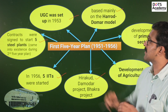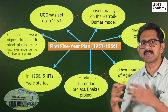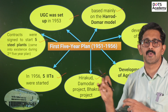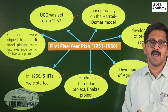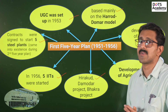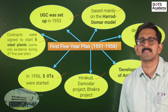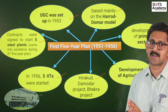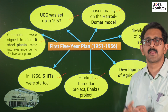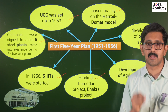The UGC was formed in 1953 during the first five-year plan. If someone says UGC was formed during the second five-year plan, that is incorrect — it was formed during the first five-year plan. It is important to know this about the first five-year plan.